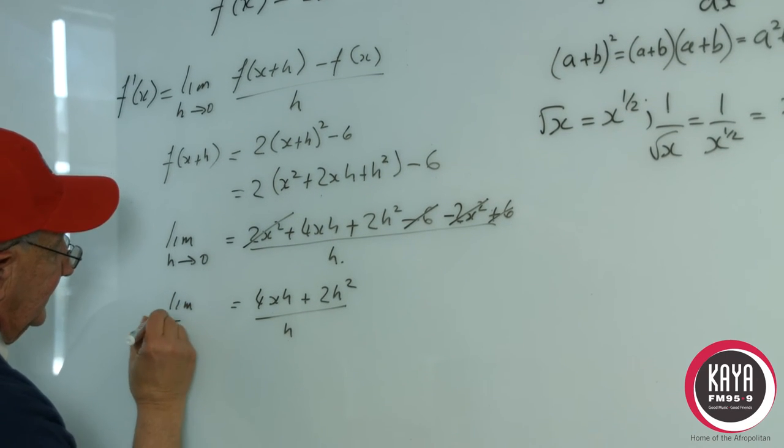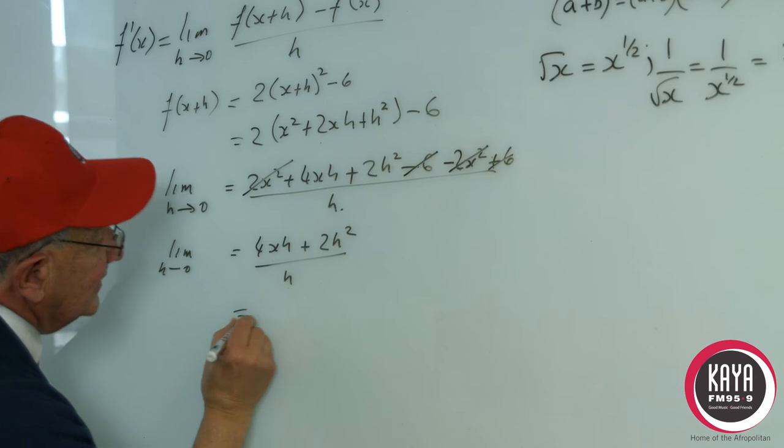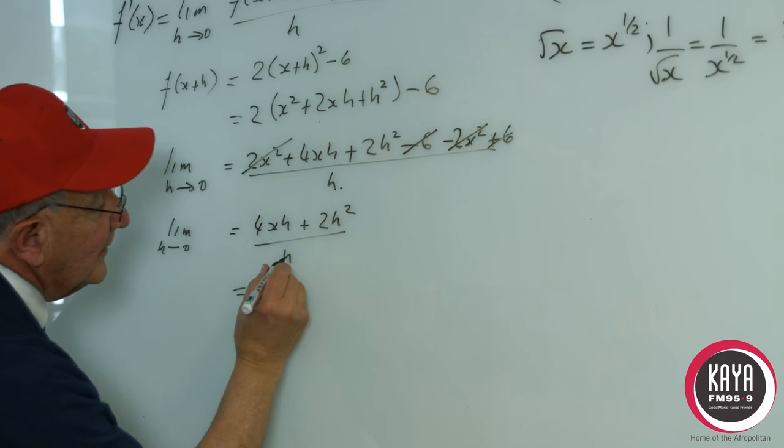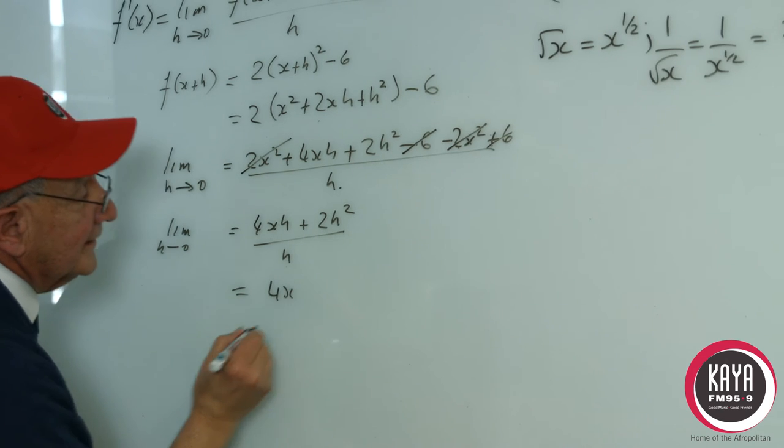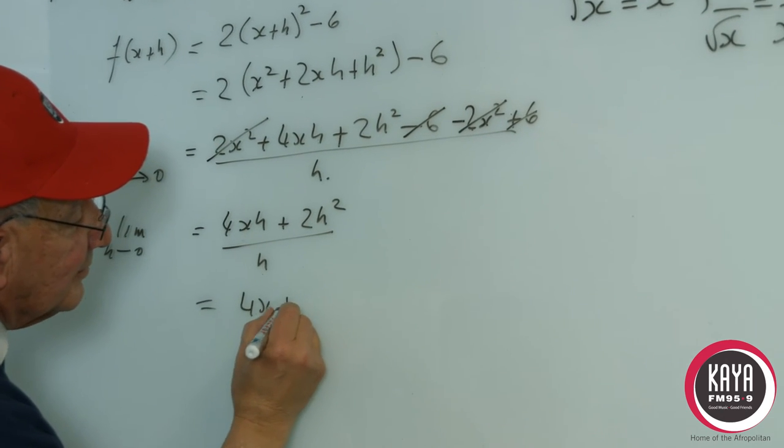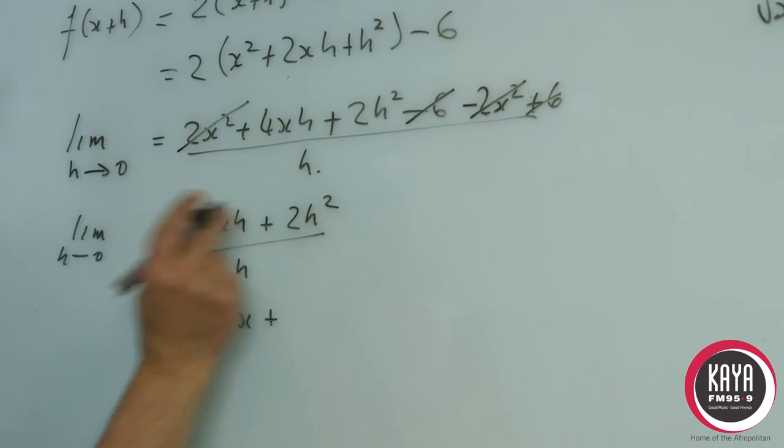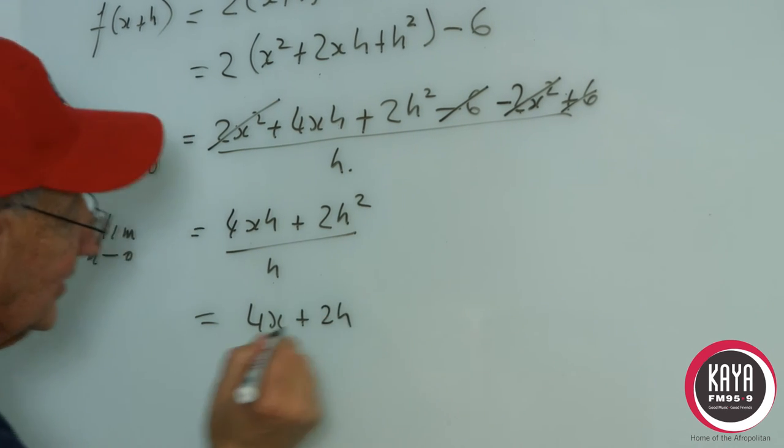And the limit again as h tends to 0. This is equal to, we divide h into 4xh and that gives us 4x plus, we divide h into that we end up with 2h.